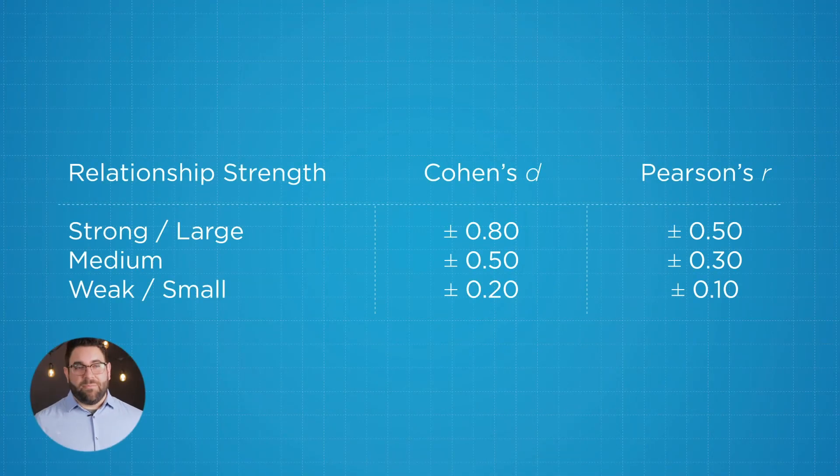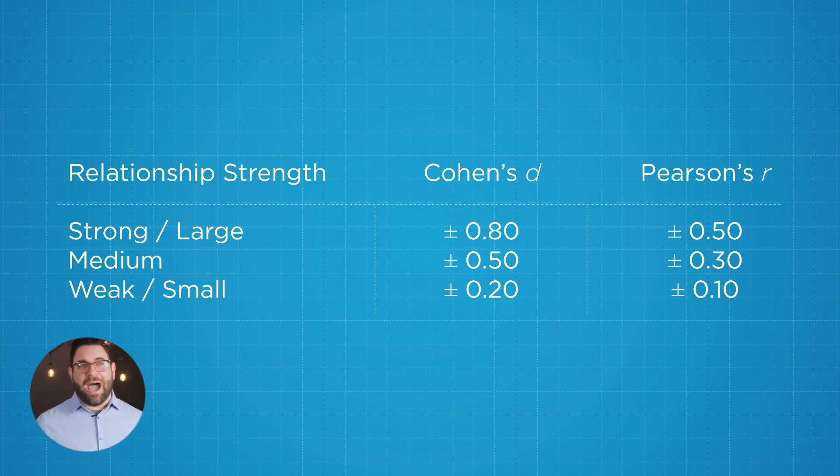And so you heard me mentioning how we quantify these relationships, whether it's negative one to one, perfectly negatively correlated to perfectly positively correlated. Let's look at a couple of different ways in which we show these relationships. For both Pearson's R and Cohen's D, we have something we like to call relationship strengths. This is a helpful way for us to determine how strongly two things are correlated.